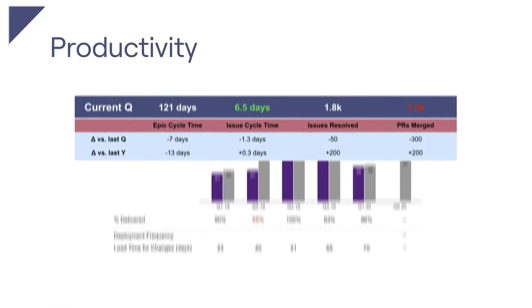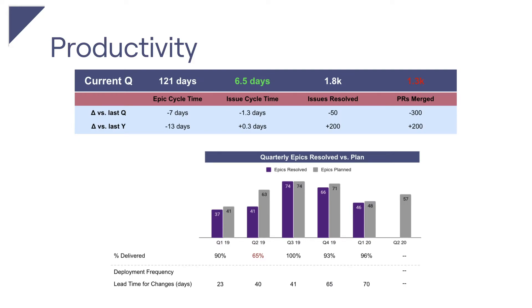Productivity is difficult to quantify and can be subjective. Slide four should focus on those productivity metrics which make the most sense when tracking your engineering team. These metrics need to convey a general sense of the activity that leads to progress against your stated deliverable goals. Keep in mind that the executive team and board may not have as deep an understanding of your engineering operations, processes, or tools. Some metrics you might highlight here include issue or PR cycle times and trends since the previous quarter or year, and a view of epic resolutions compared to the planned work.